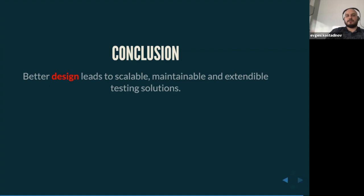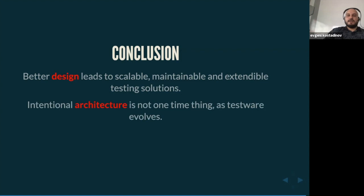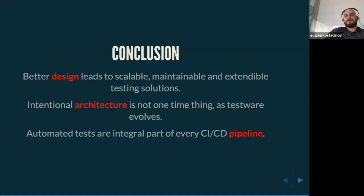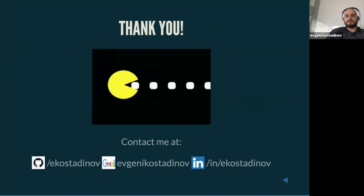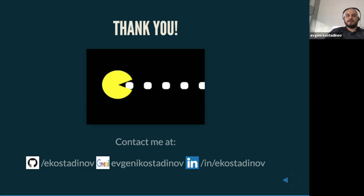As a conclusion, a couple of important points to remember from today's talk: the better the design, the better our solution — it will be scalable, maintainable, and extendable. Intentional architecture is not a one-time thing; it's a process as our testware evolves around the system under test, and we need to dedicate specific time for architecture and emerging design to happen naturally. Lastly, automated tests are an integral part of every CI and CD pipeline — we need to make it work there because that's where the greatest value of our testing really resides. You can contact me at GitHub or Gmail, or find me on LinkedIn — I'll post all the slides in my GitHub account.